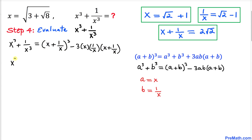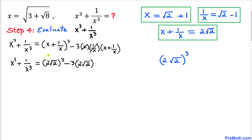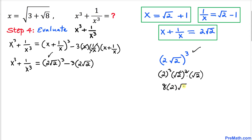This gives (2√2)³ minus 3 times x times 1/x — which cancel to 1 — times 2√2. Expanding the first term: (2√2)³ = 2³ · (√2)² · √2 = 8 · 2 · √2 = 16√2. So the expression becomes 16√2 minus 3 times 2√2, which is 16√2 minus 6√2.